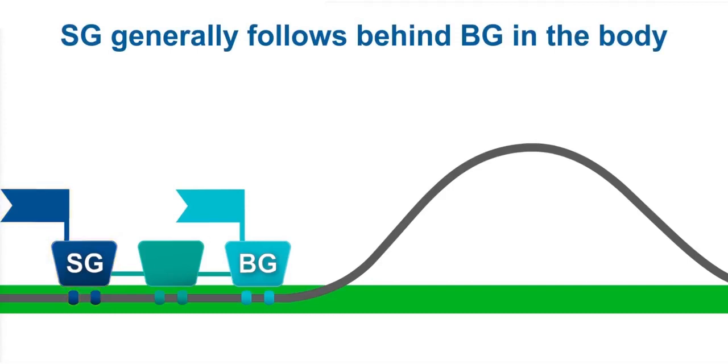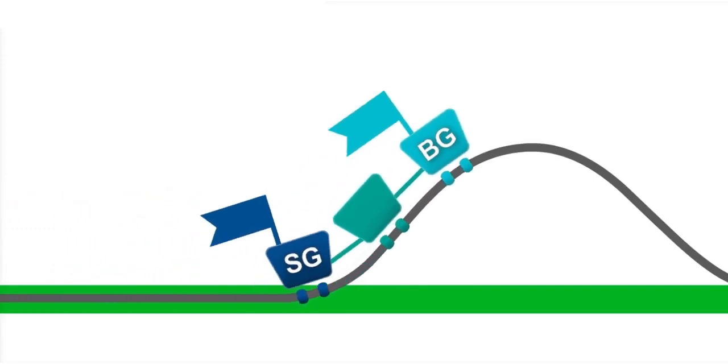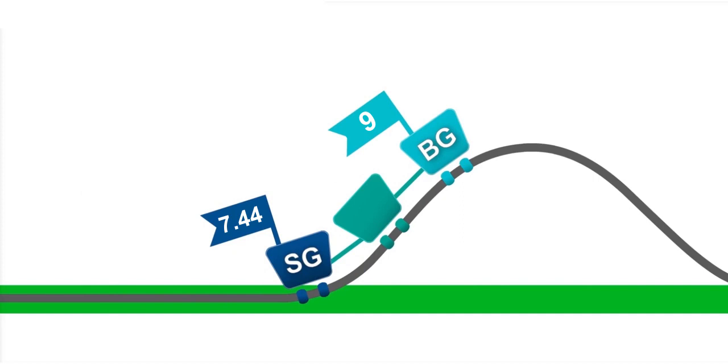Now think about going up a hill on the roller coaster as a rise or upward trend in glucose levels. As the roller coaster starts up the hill, you can see that the BG in the front car is leading the SG in the back car.